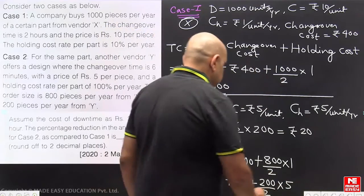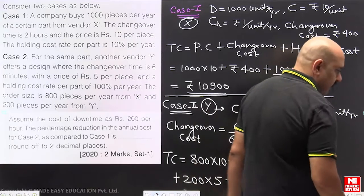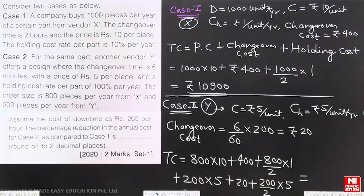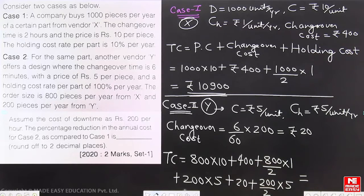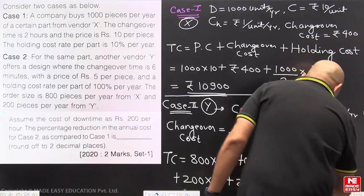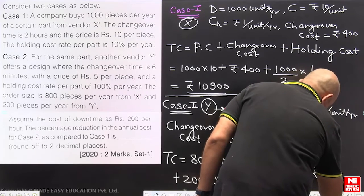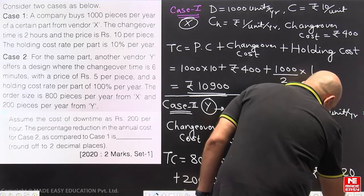We will take the sum of all those. 8000 plus 4, 8800. This side 8800 plus 200 by 2 that is 500, 520. So it will be 10,320. The cost will be 10,320.